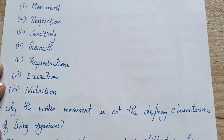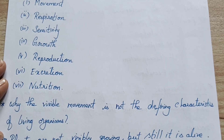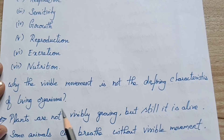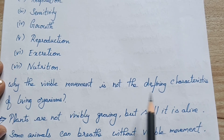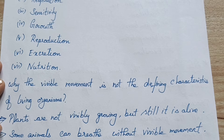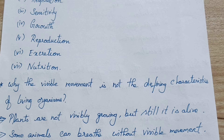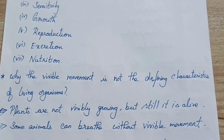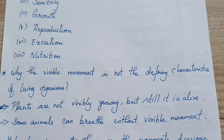So why is visible movement not the defining characteristic of a living organism? Why is movement alone not the defining characteristic? Because even if an organism is not moving, it can still be alive. For example, plants are not visibly growing — we cannot see them grow — but over time they have grown, which shows they are living organisms.